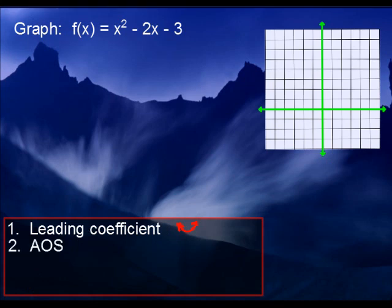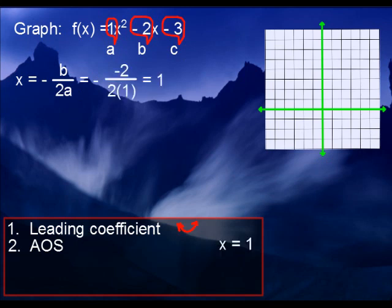Now for the axis of symmetry. There is a formula for the axis of symmetry that you can use, and it comes from the quadratic formula. And here it is: x equals negative b over 2a. a, b, and c are the coefficients for each term. a is 1, so in this case that would go underneath. b being negative 2 would go on top. So x equals 1.